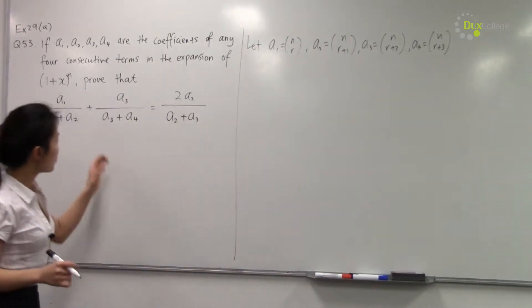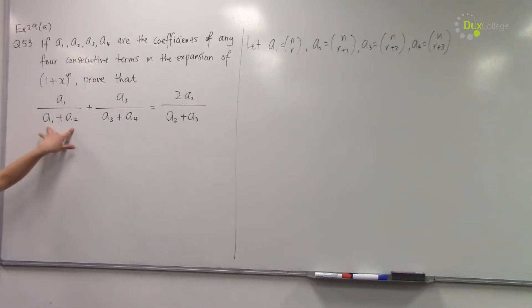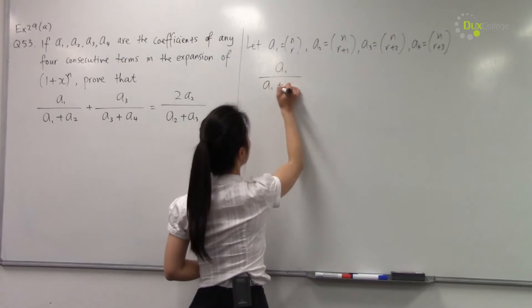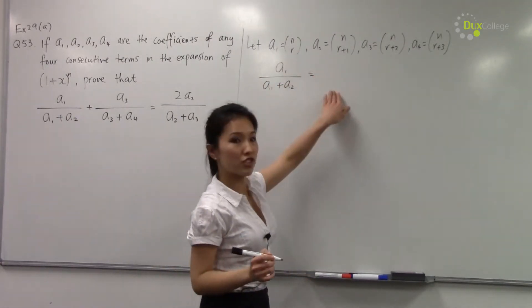Now the first thing we have to do is find an expression for a₁ over a₁ plus a₂. Let's put these coefficients in.